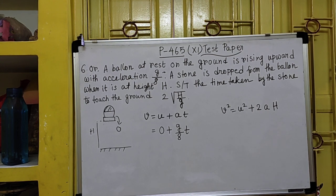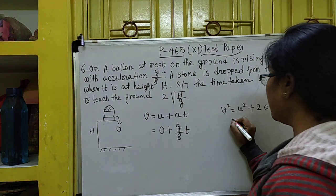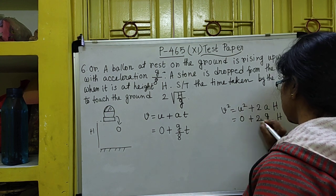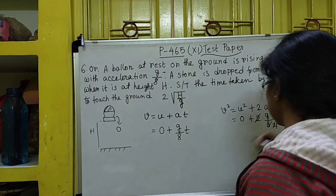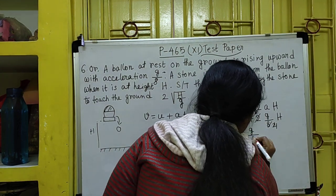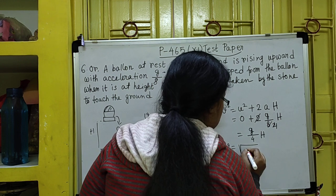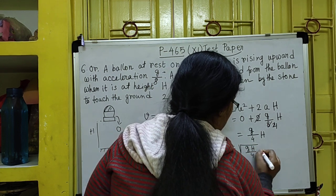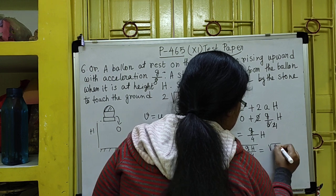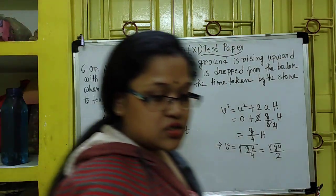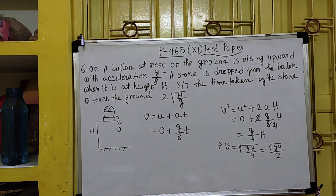Putting H in place of S, with u = 0: v² = 2·(g/h)·H = 2g·H/h. Simplifying, this gives v² = GH/4, which means V = √(GH)/2, or equivalently √(GH/4).